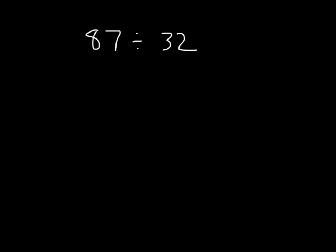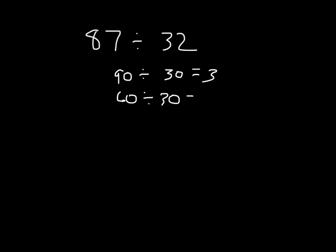87 divided by 32: if I round the divisor for an easier division problem, it would be divided by 30. We know that 90 divided by 30 would give us 3. However, 90 is larger, so our estimated quotient would probably end up being too large. Instead of 90, we could choose 60, and 60 divided by 30 is 2. Let's use that estimate to help us solve this.